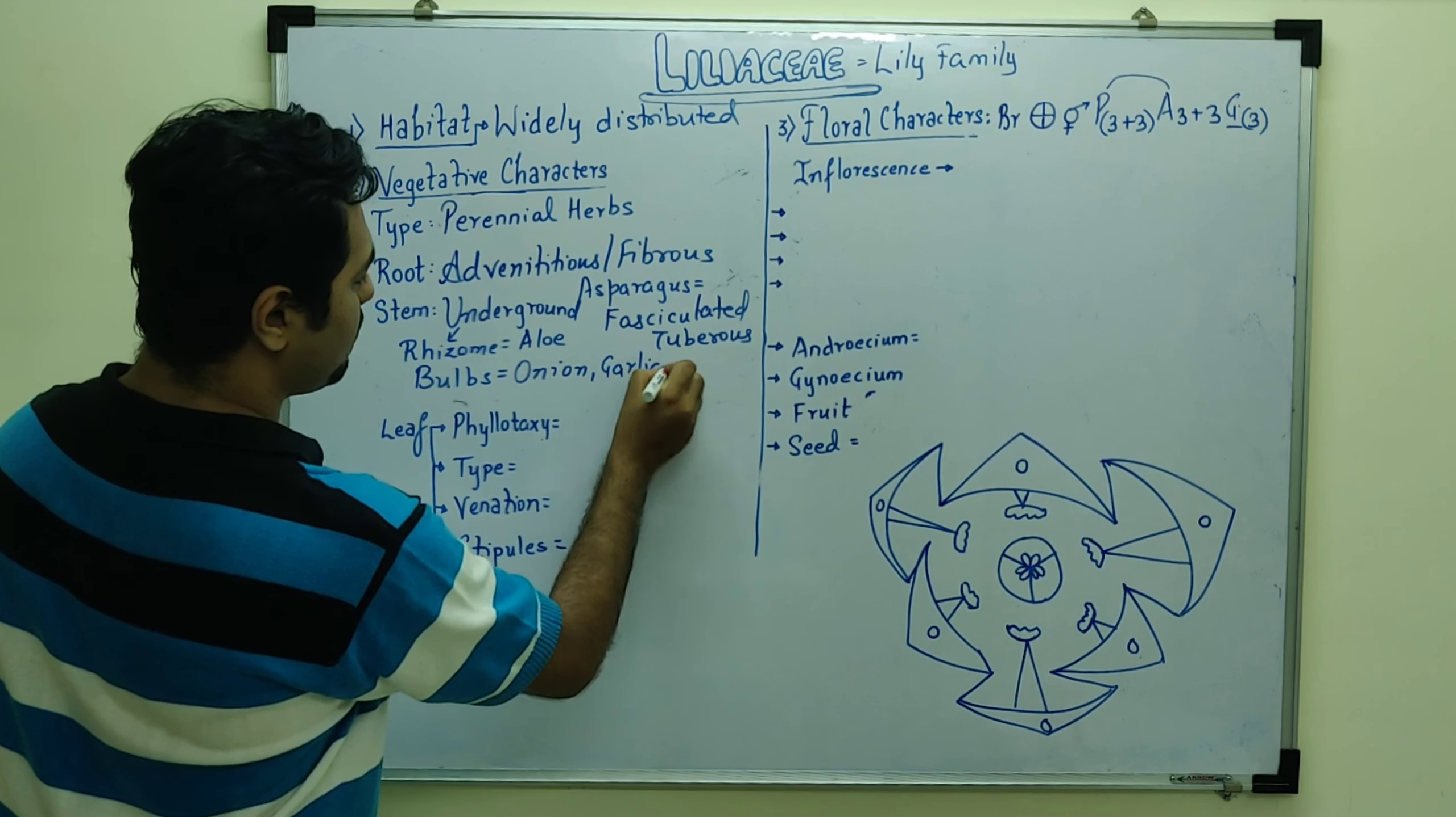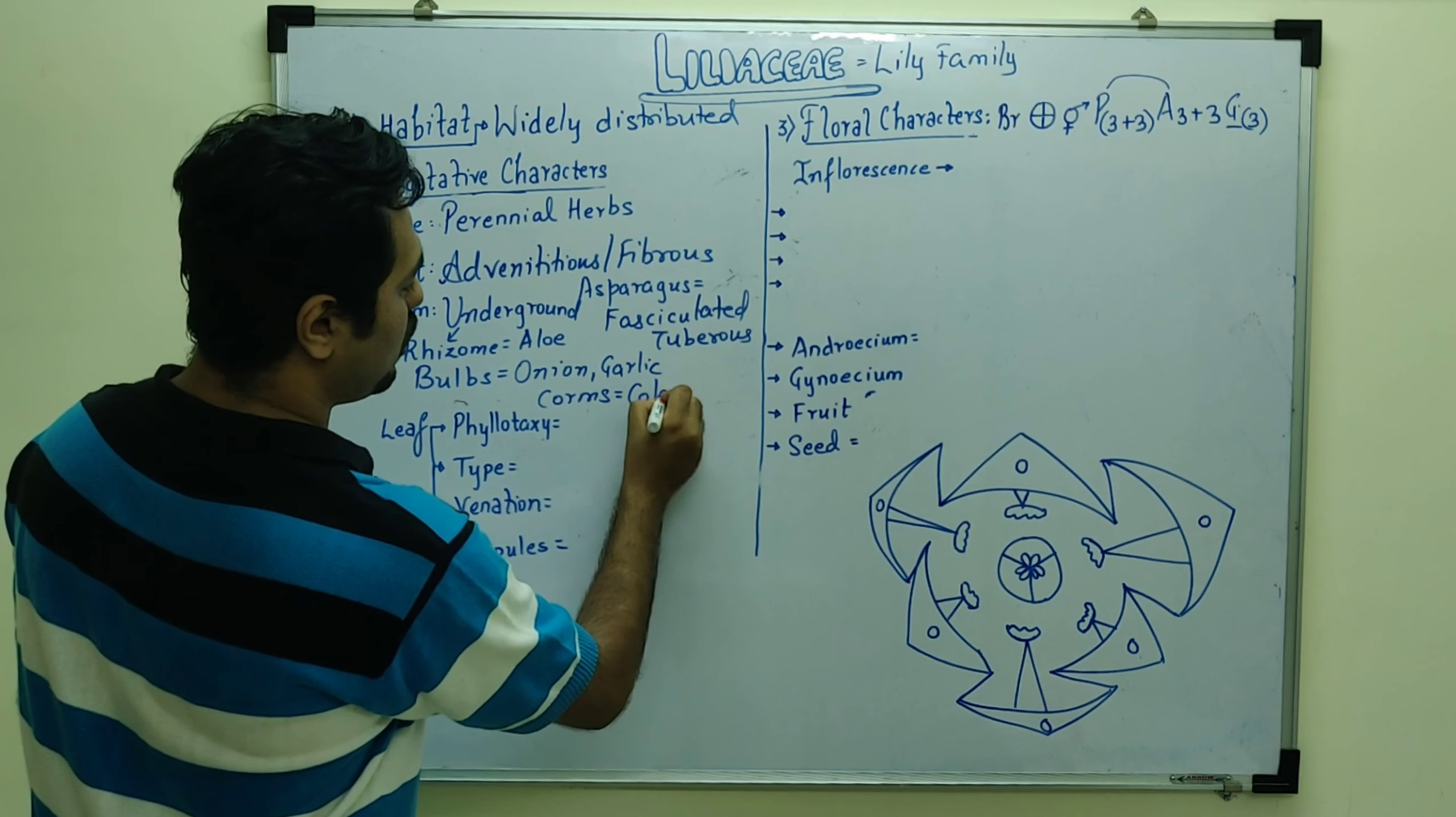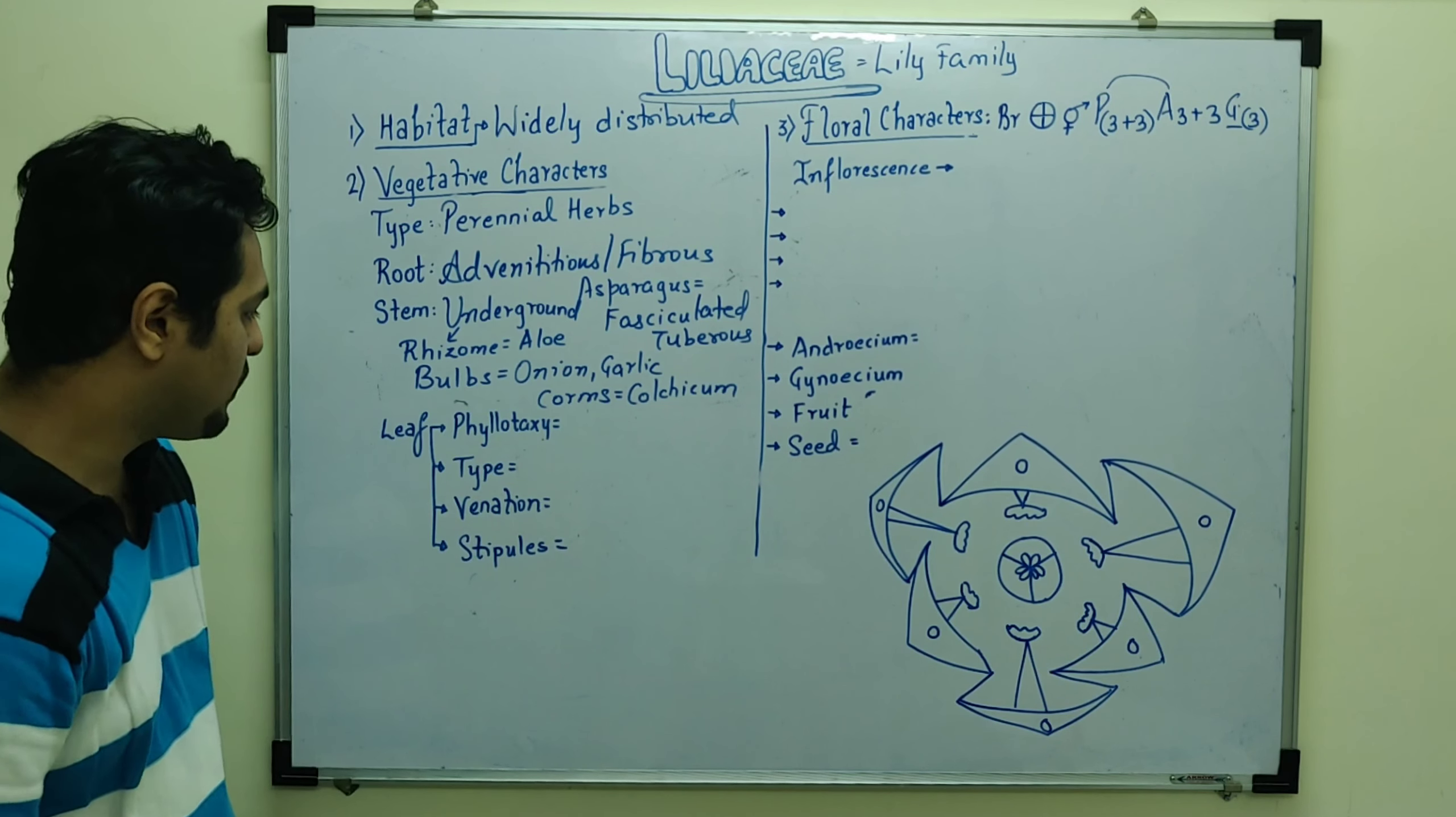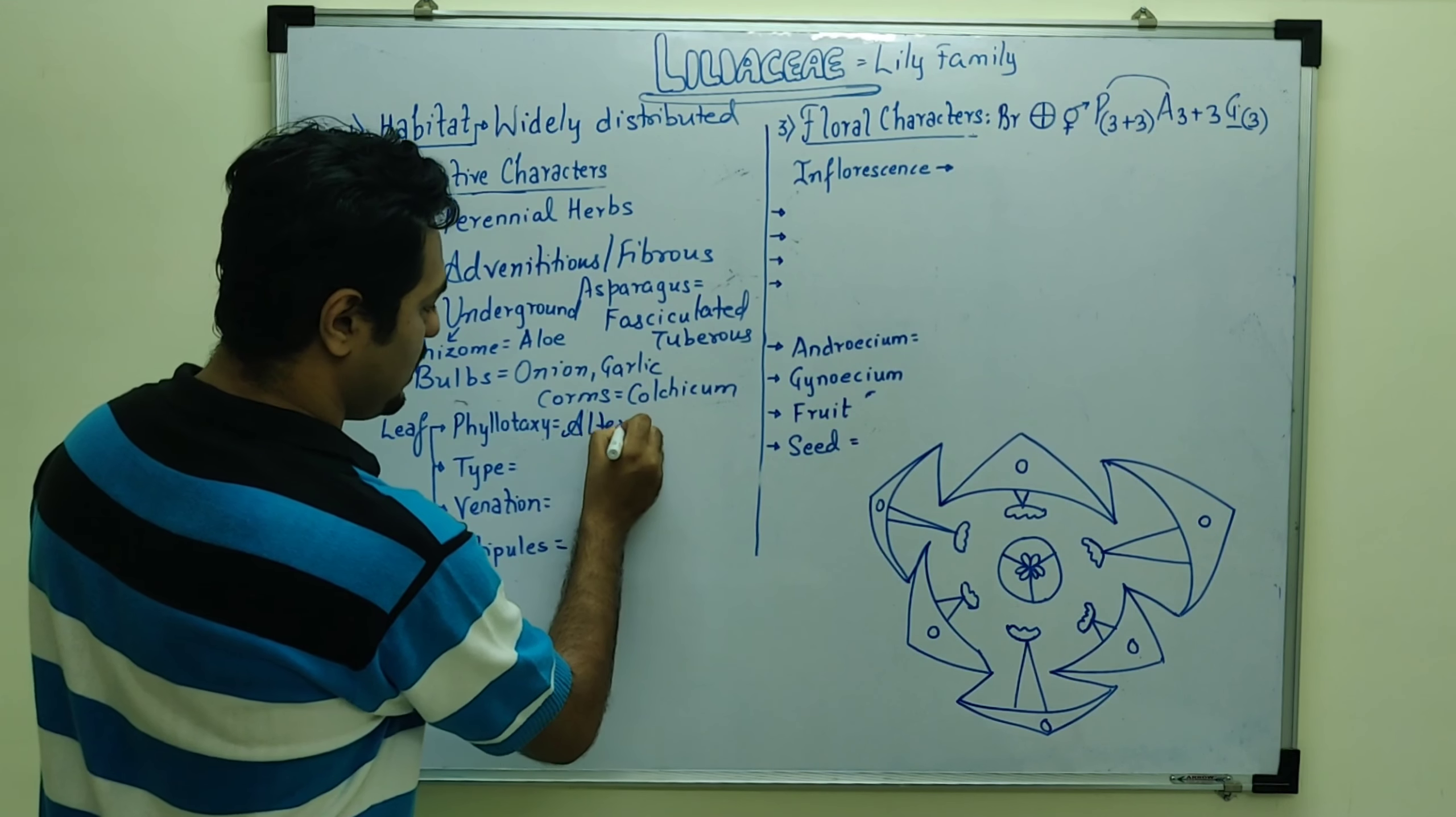And bulbs, which we can see in the plant, that is the onion, garlic, or even corms. Corms we can see in colchicum plant. So, these are the underground stem, normally rhizome, bulbs, or corms.